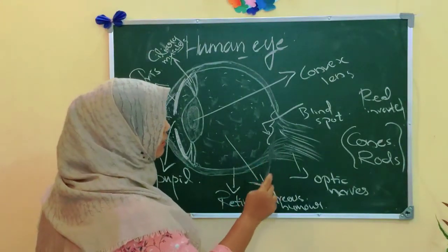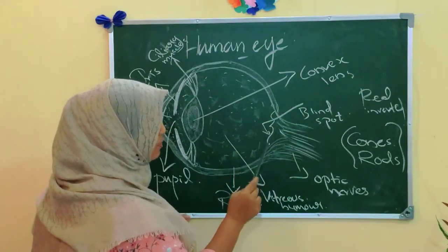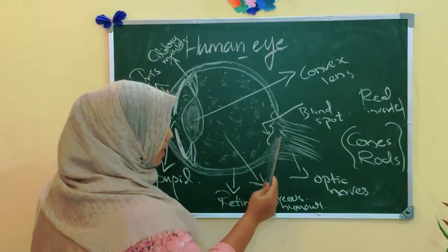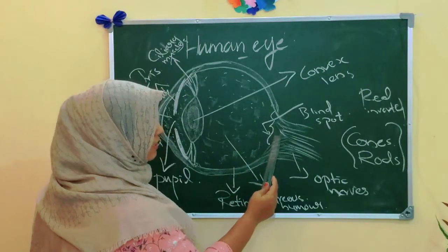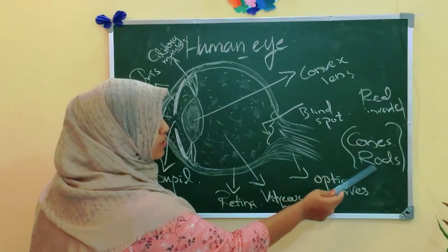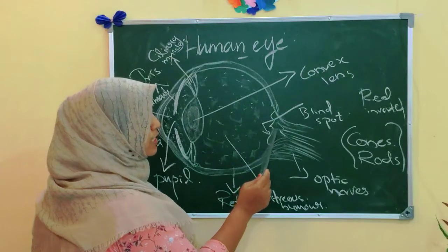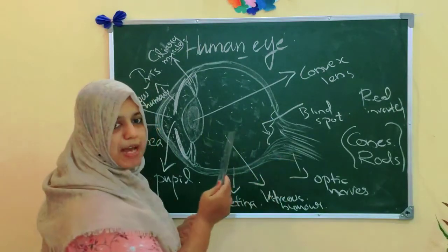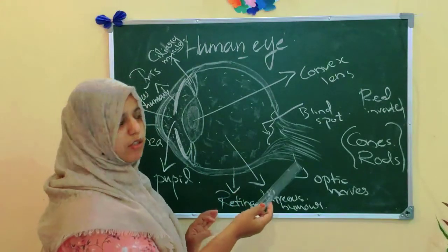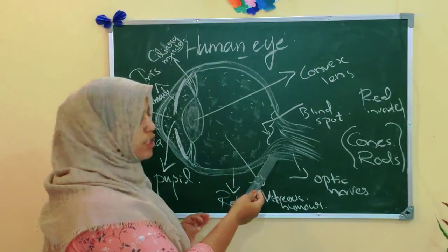Another important part is the blind spot. In this part of the retina, there is an absence of sensory cells — cone cells and rod cells are absent here. Because of this, no vision is possible at the blind spot.